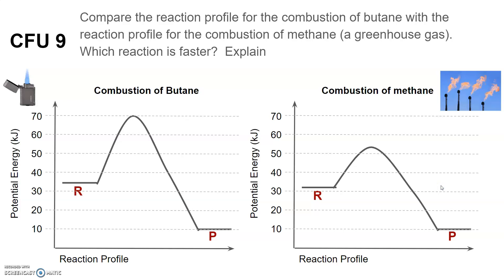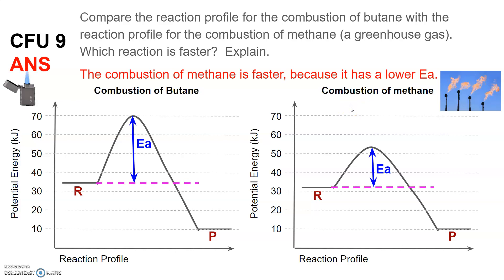The next CFU: compare the reaction profiles for the combustion of butane and methane to determine which reaction is faster. Pause the video. The answer is methane, because methane has a smaller activation energy compared to butane. A smaller activation energy means it is a faster reaction.